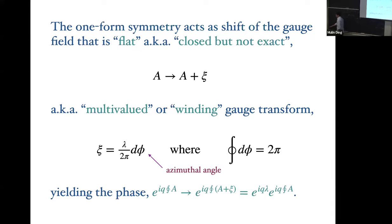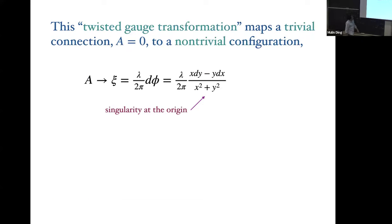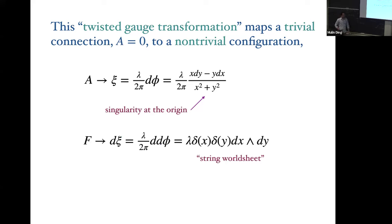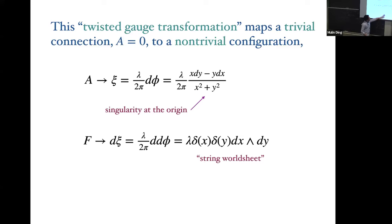Just to be very explicit: start with the pure trivial connection and apply a gauge transformation — this is d-phi written in Cartesian coordinates. You can see there's a singularity at the origin, as expected since polar coordinates have a pole there. If I keep that point and compute the curvature, I get something which is precisely a delta function at the origin. This is a nice way of thinking about what this transformation does: it produces a defect. U is not innocuous — it produces a string-like or magnetic flux tube object upon which we're measuring the Aharonov-Bohm phase.